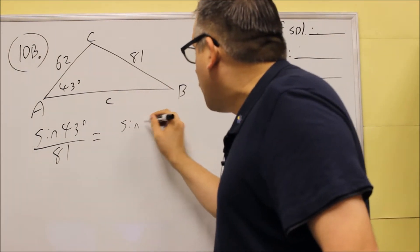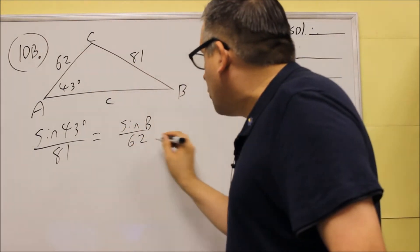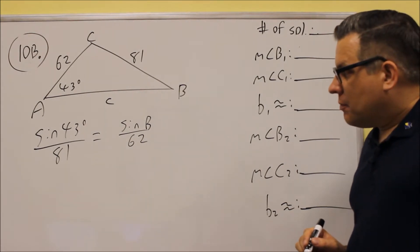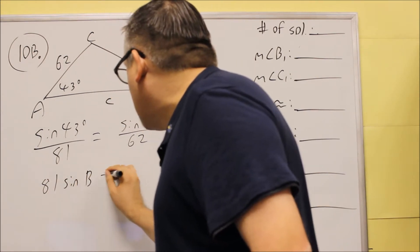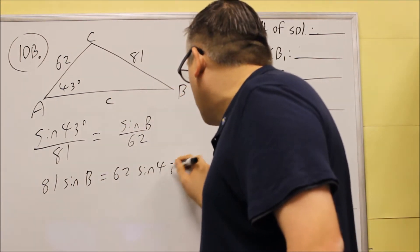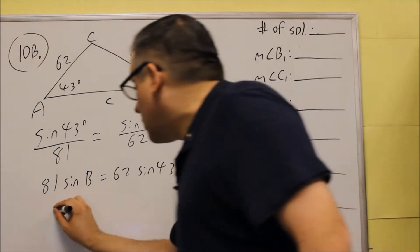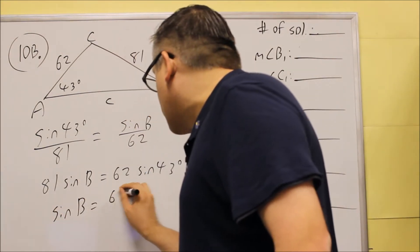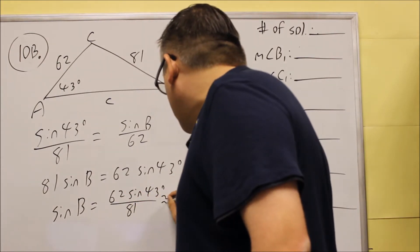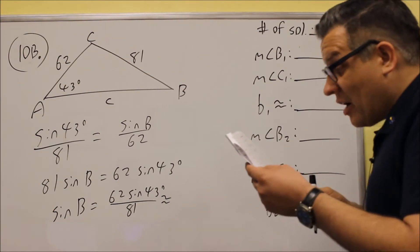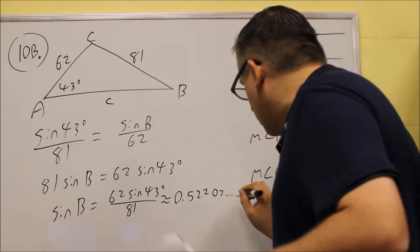We have enough information to solve for B since we have a side opposite that angle provided. We're going to cross multiply: 81 sine B equals 62 sine 43 degrees. Then we divide both sides by 81 to get sine B, so sine B equals 62 sine 43 degrees over 81. Put that into the calculator and you get .52202 and some more decimals.